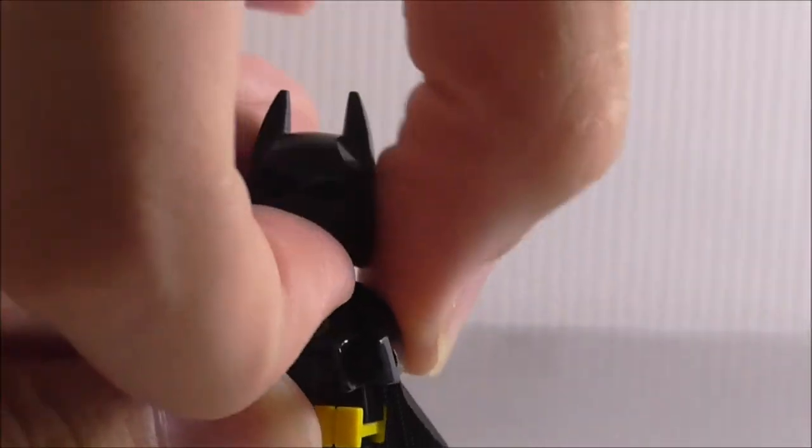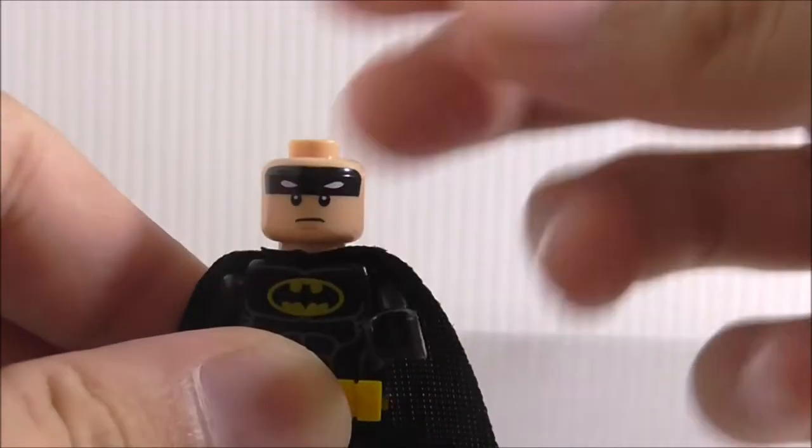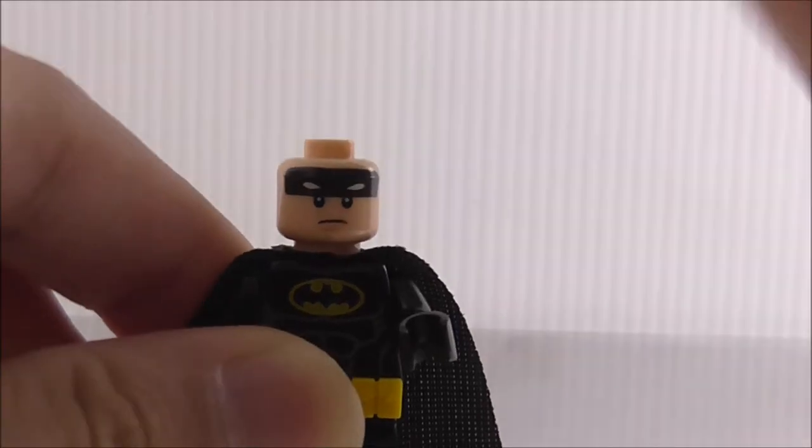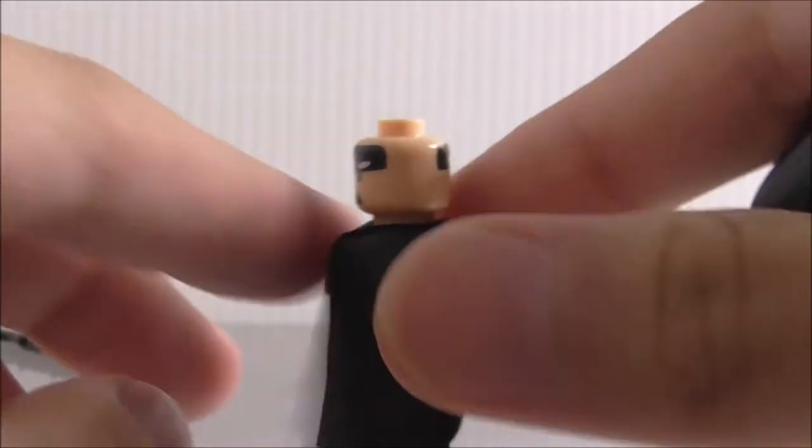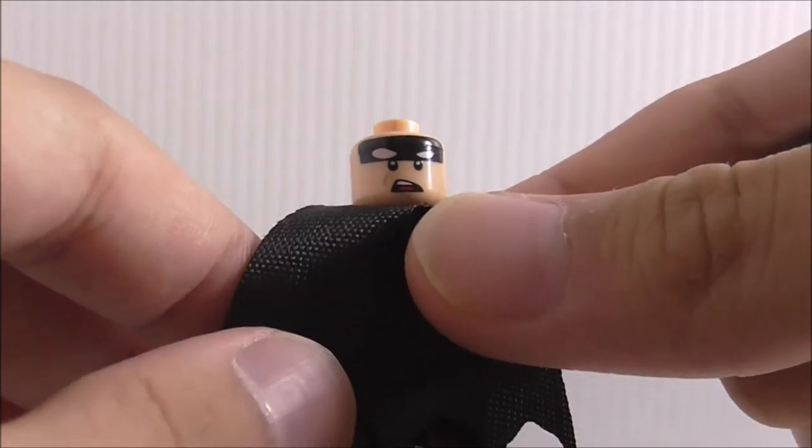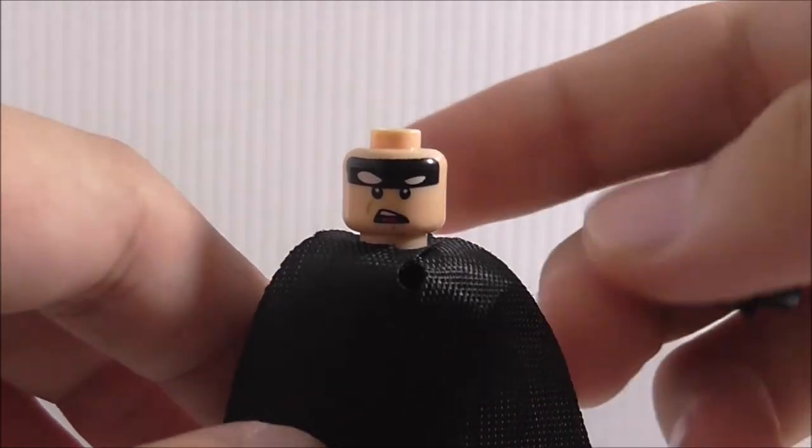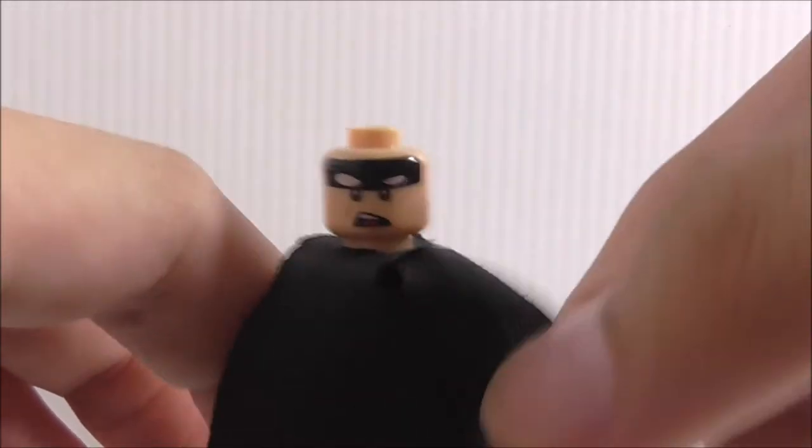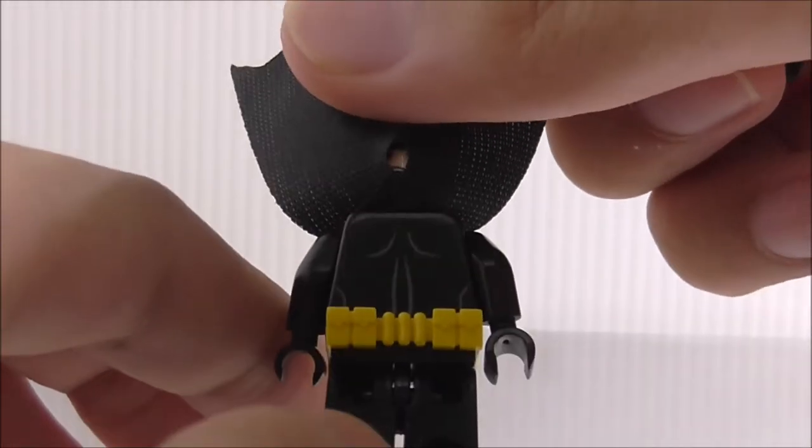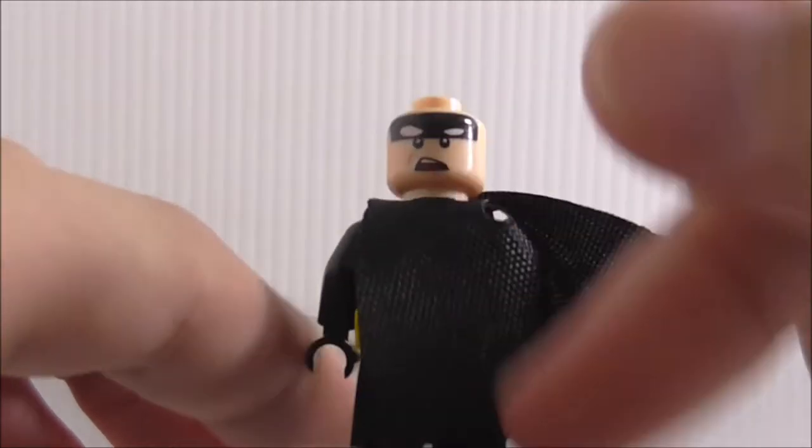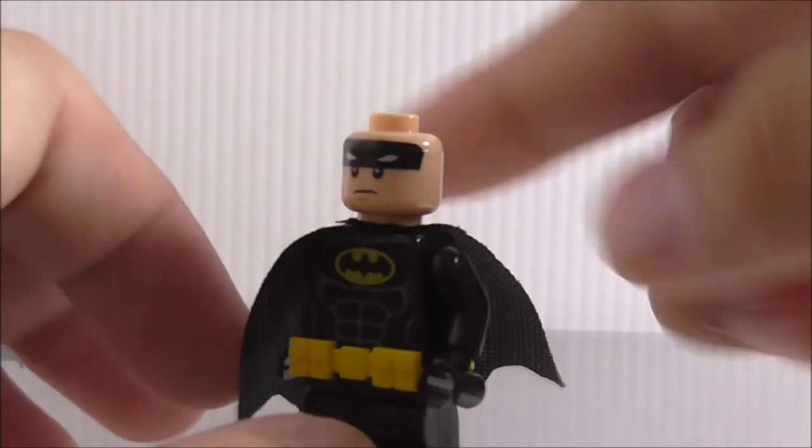Just like all the other Lepin Batman Movie Batmen with this utility belt, this torso is very loose, so that's a problem. You can see you got his face here and that's a double sided face. You got his angry kind of face. This is the back printing, pretty simple, basic printing.